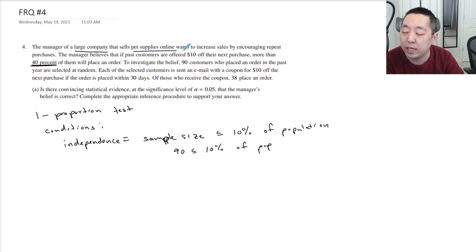I'm going to assume that it's reasonable to assume the population of customers is greater than or equal to 900. So I think this condition is fine. That's the independence condition.